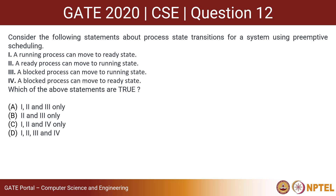Statement A: A running process can move to ready state. Statement B: A ready process can move to running state. Statement C: A blocked process can move to running state. Statement D: A blocked process can move to ready state. Which of the following statements are true?